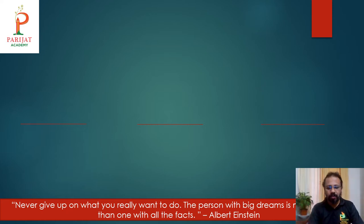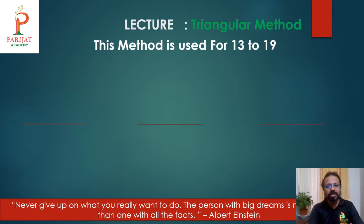Let's learn with some examples. Triangular method, this method is used for 13 to 19's number. So, multiplier should be 13 to 19. Let's see with some examples.